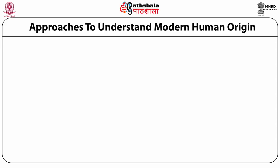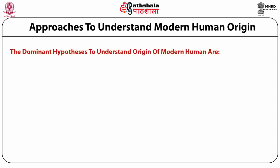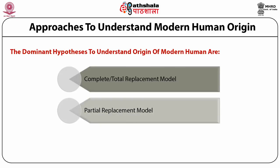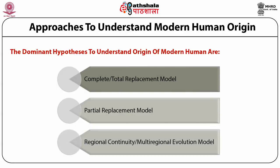Approaches to understanding modern human origins: The dominant hypotheses are first, a complete or total replacement model; second, a partial replacement model; and third, the regional continuity model, also called the multi-regional evolution model. The complete replacement and regional continuity models are two prominent but totally opposite views. The partial replacement model is a compromise view incorporating some aspects of both models.